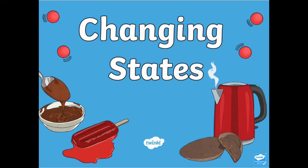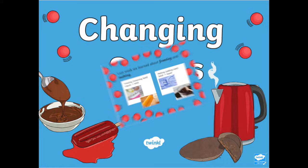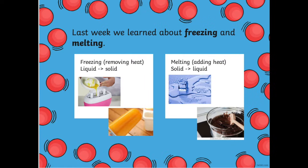Hello Grade 2 and welcome back to our science lesson about changing states of matter. Last week we learned about freezing and melting. Freezing is removing heat when a liquid changes to a solid, like liquid freezing into an ice lolly. Melting is adding heat when a solid melts to a liquid, like an ice cube melting into water and solid chocolate melting to liquid chocolate.